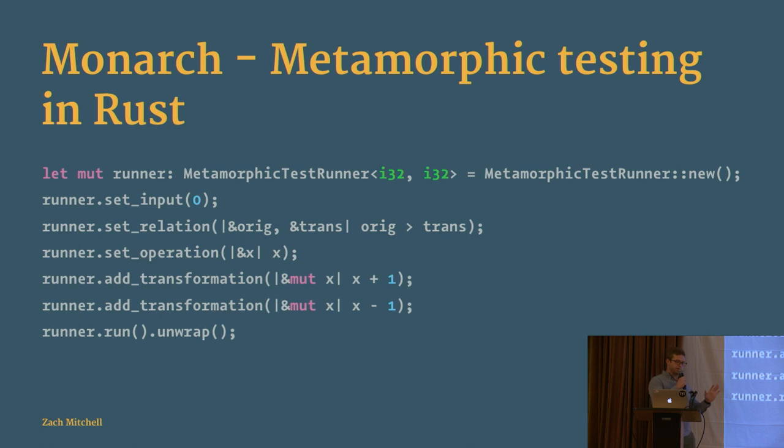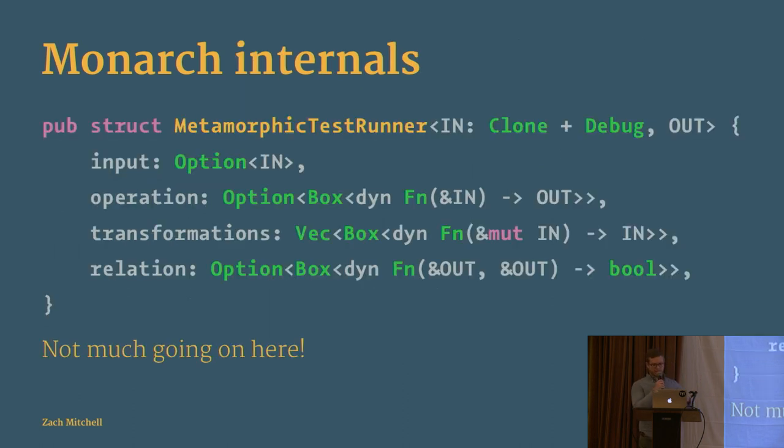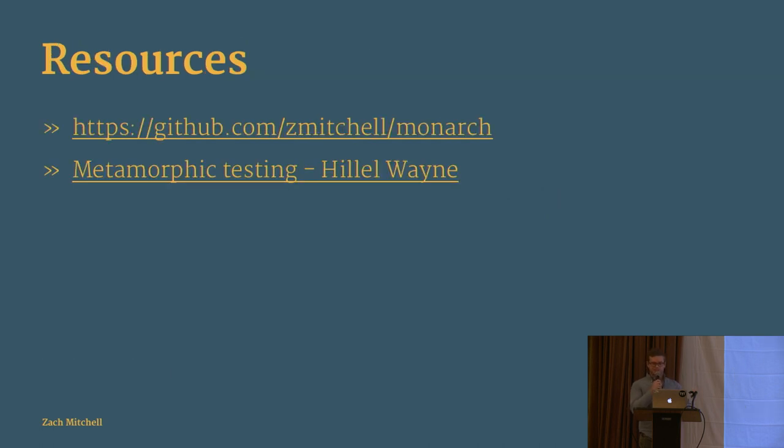I wrote something in Rust that I call Monarch which does this. There's really not a whole lot going on here. You just provide a couple of closures for your relation, transformations, et cetera. Not a whole lot going on, just a couple closures. That's all I got.